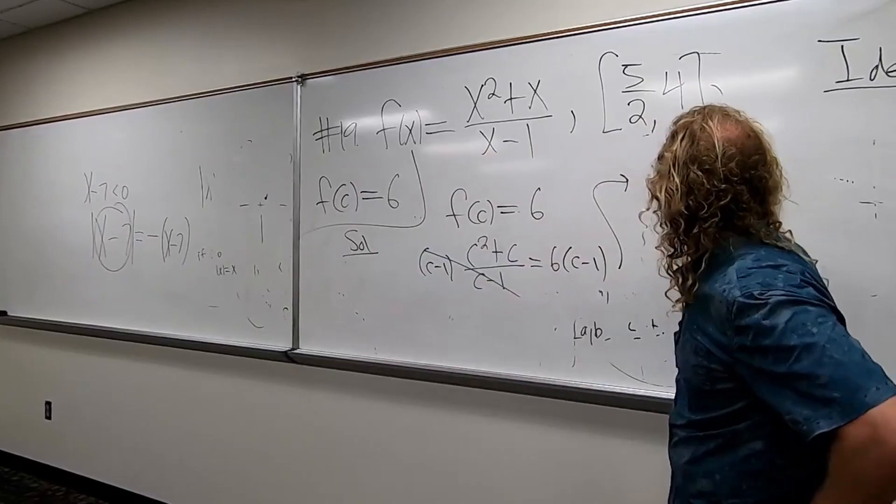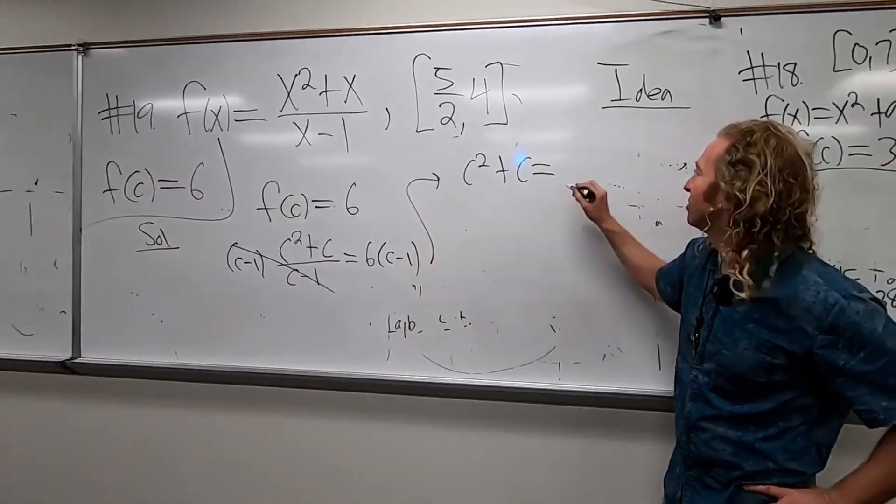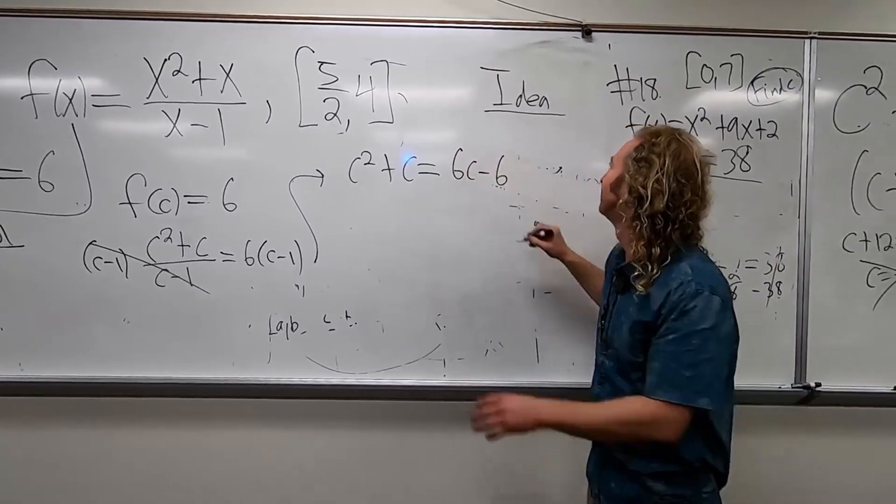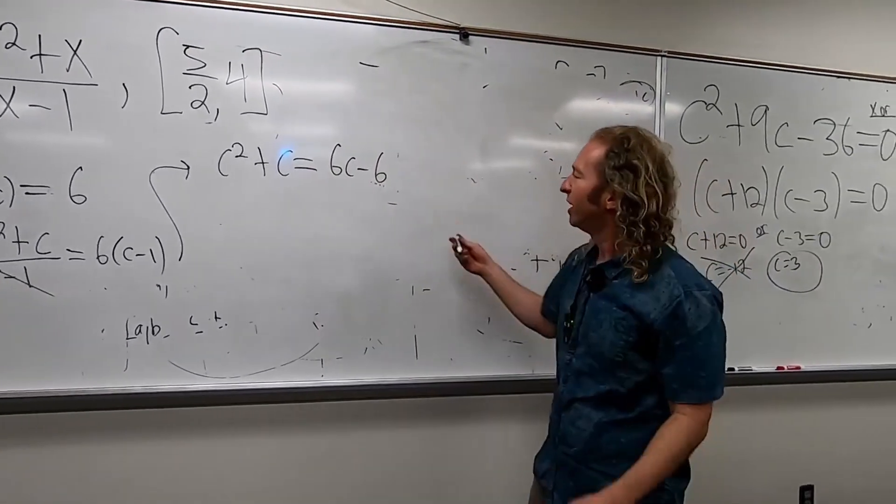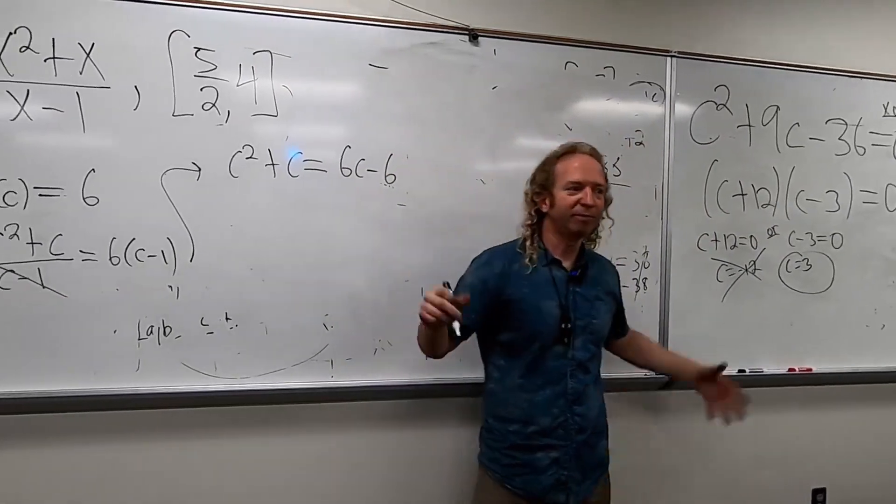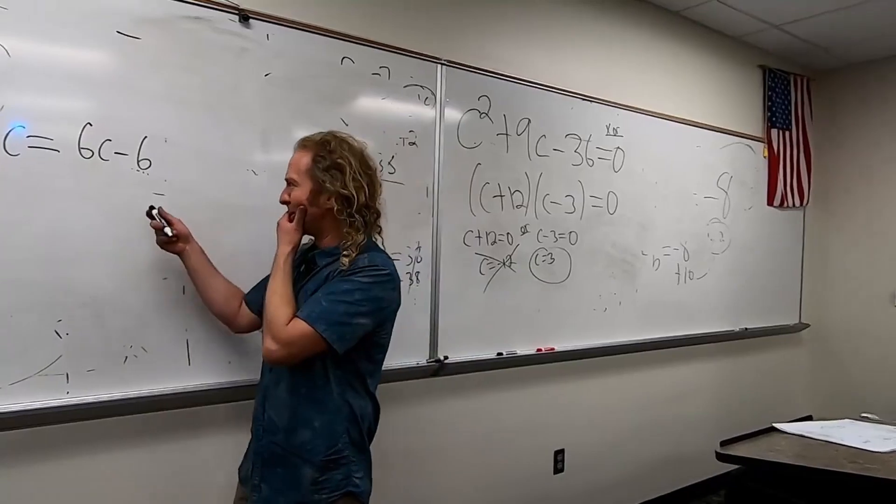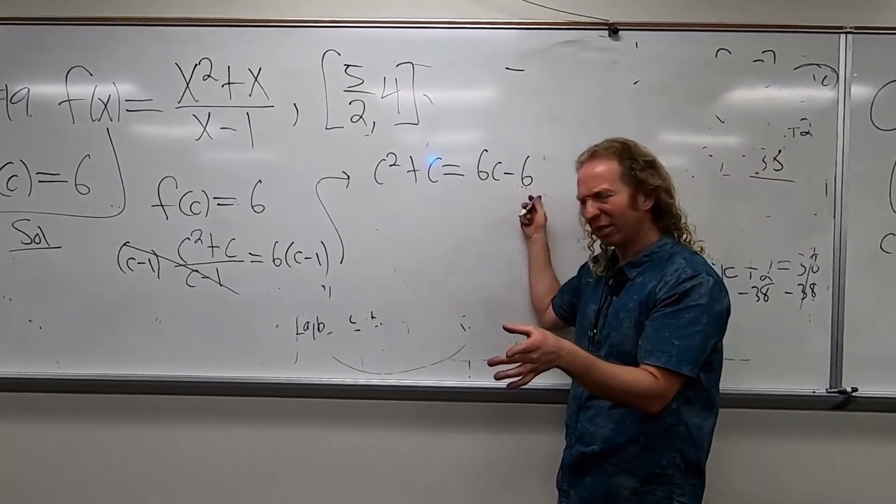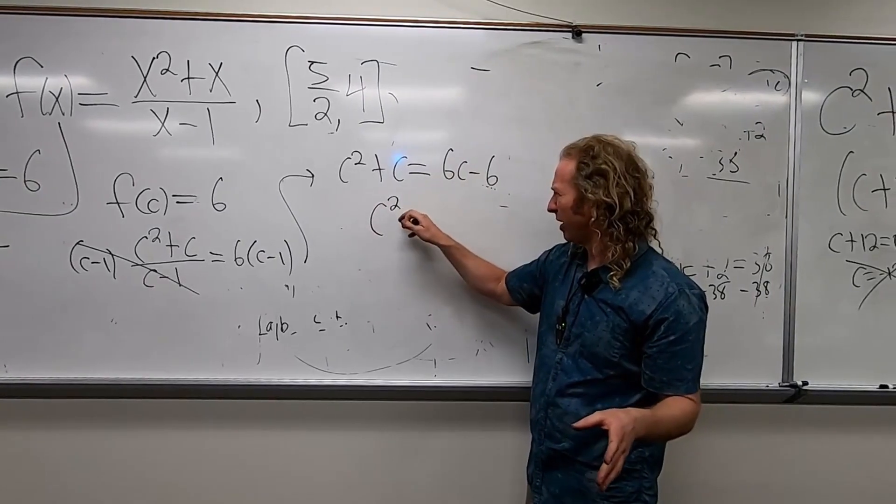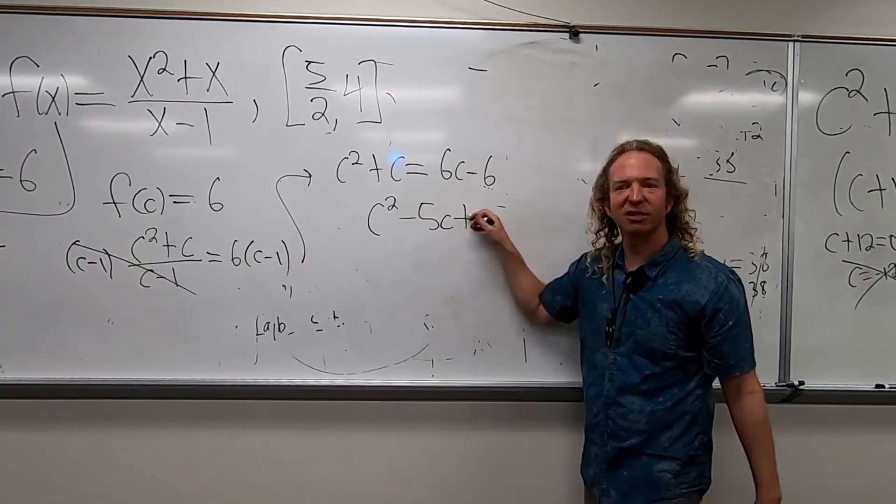So we get C squared plus C equals 6C minus 6. All right, good stuff. This is a quadratic equation. Generally when you're solving these, you want to set them equal to zero, right? So subtract 6C and add 6. Would that be C squared minus 5C plus 6? Plus 6.